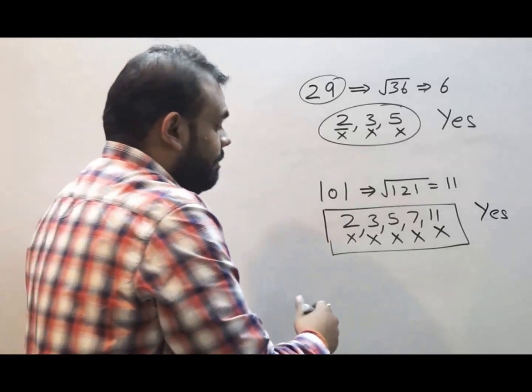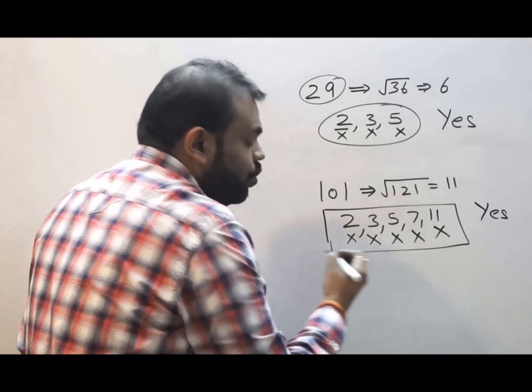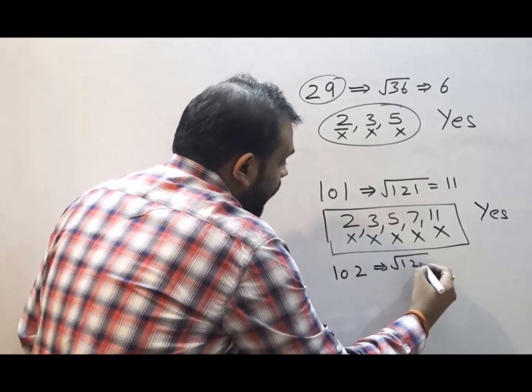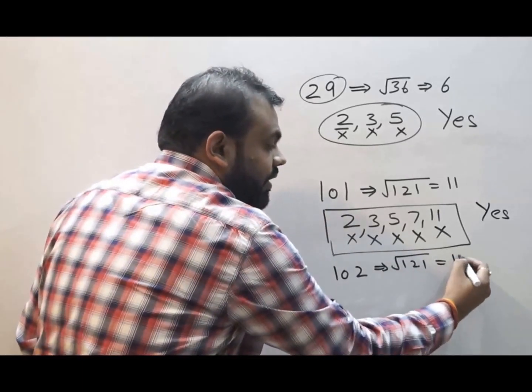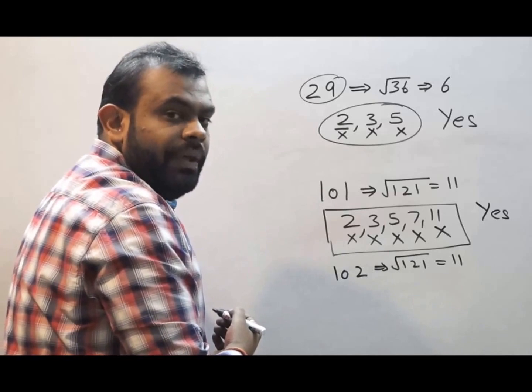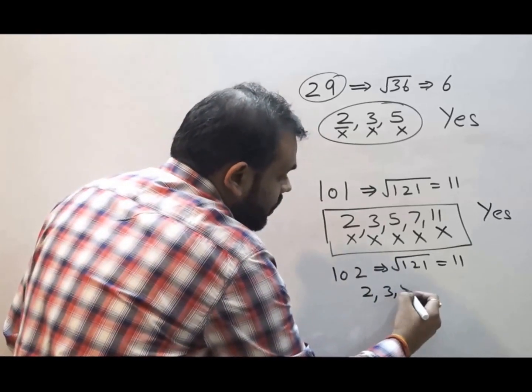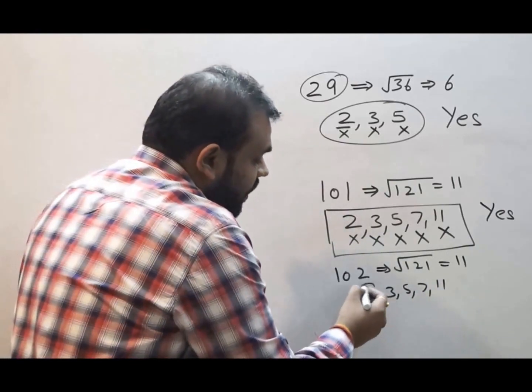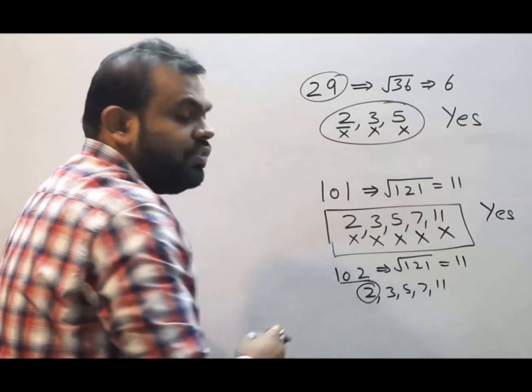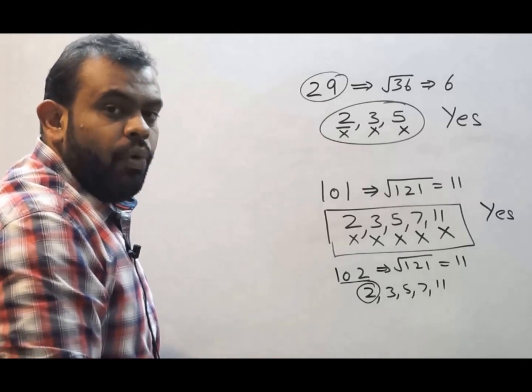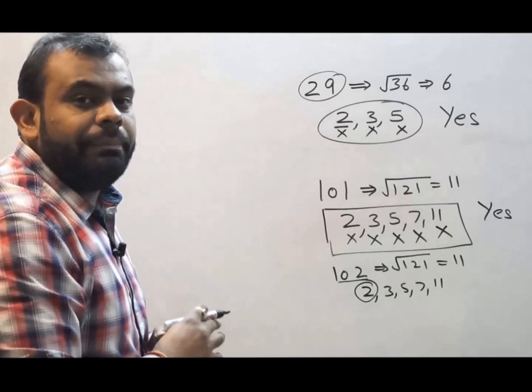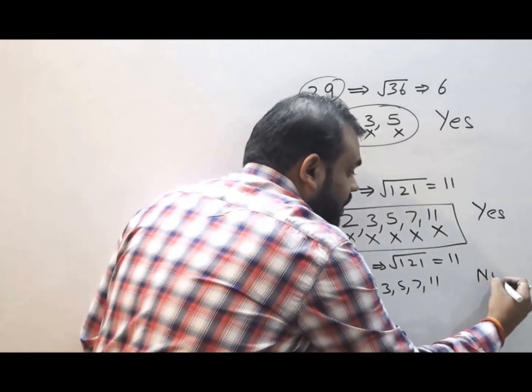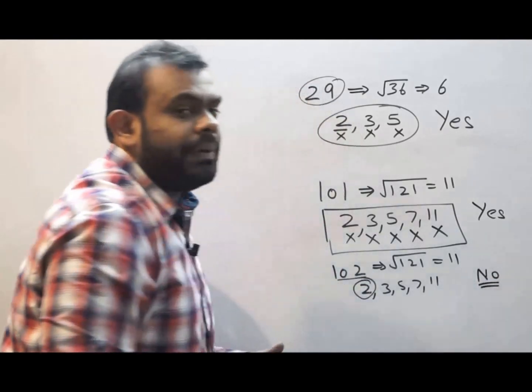Let us take one more example of 102. If I take the above perfect square that is 121 and write down its square root it will be 11. It becomes 2, 3, 5, 7 and 11. Straight away we can see that 102 is divisible by 2. The moment we get any one single prime digit dividing the given number we straight away say that it is not a prime number.